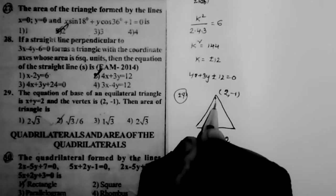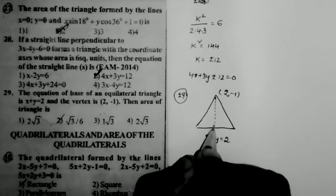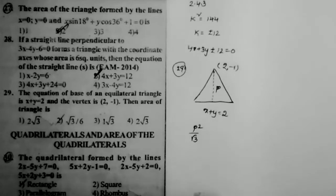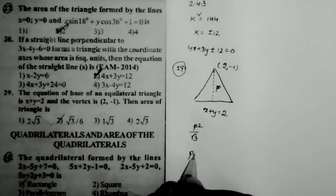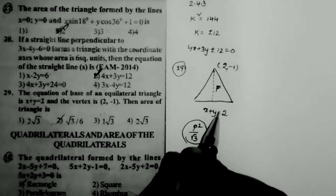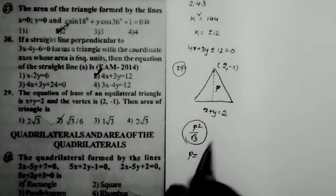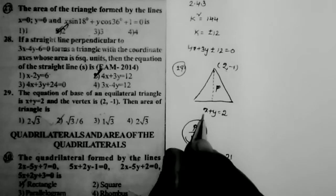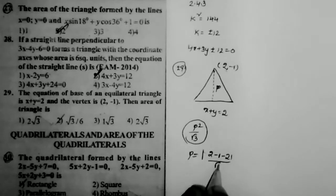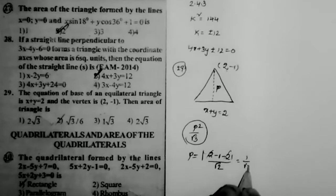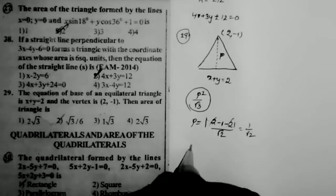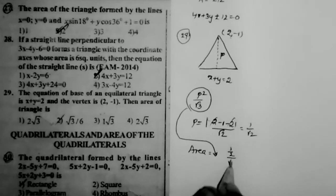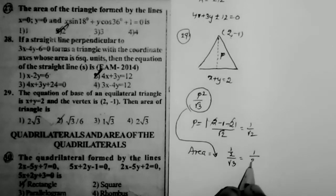The area of an equilateral triangle is p² / √3, where p is the perpendicular distance from the vertex to the opposite side. Substituting the vertex (2, -1) into the line equation: p = |2 - 1 - 2| / √(a² + b²) = 1 / √2. So p = 1/√2, and area = (1/√2)² / √3 = 1 / (2√3).